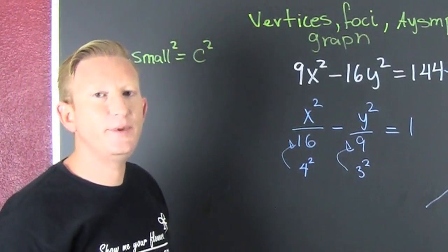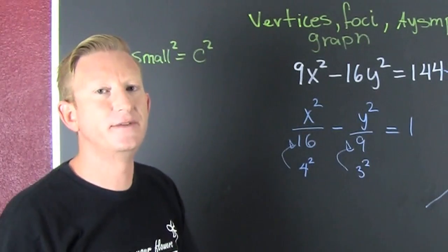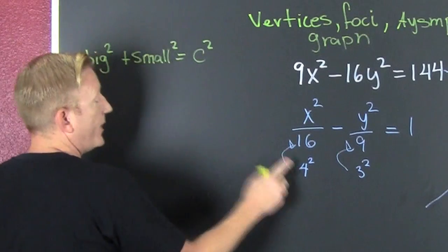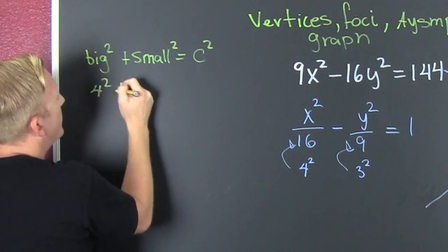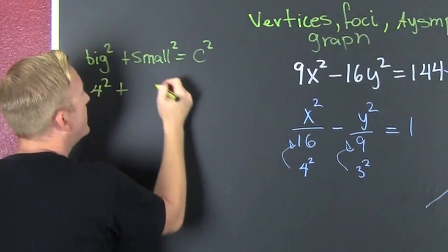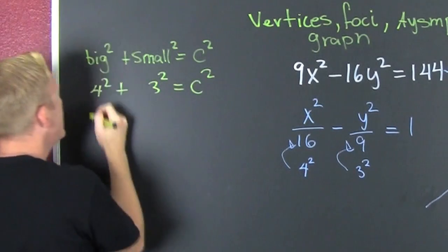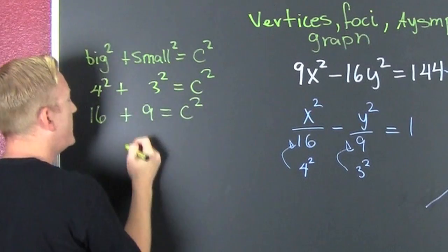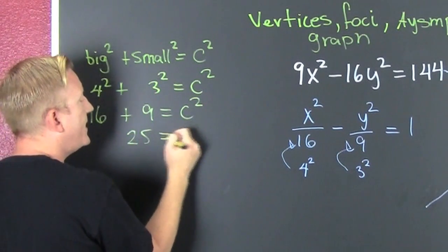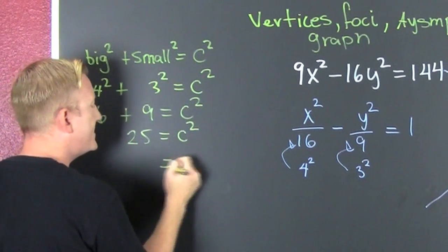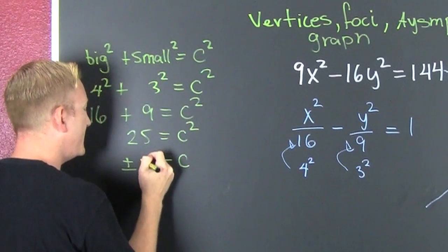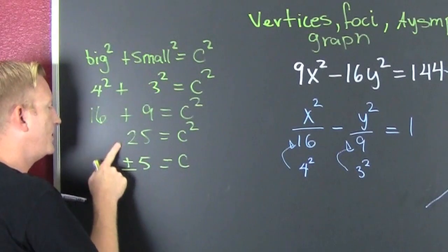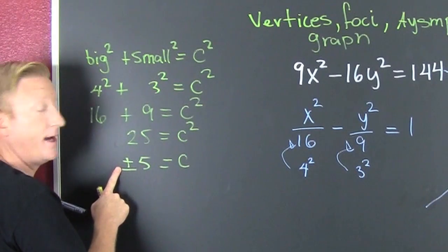Some books use a's, b's, and c's, which can be a little confusing. So what do I have? I'm taking my big squared — 4 squared — plus my small squared — 3 squared — and that's going to be c squared. So I have 16 plus 9 equals c squared, so 25 is c squared, and c is going to be plus or minus 5, because you take the square root of both sides.